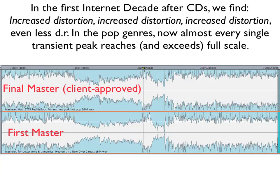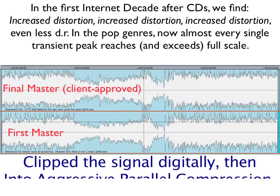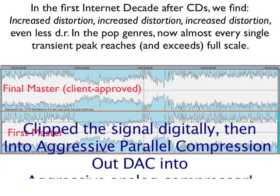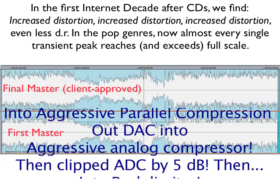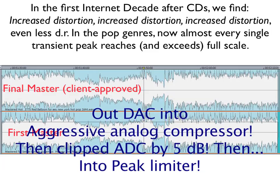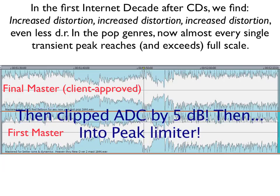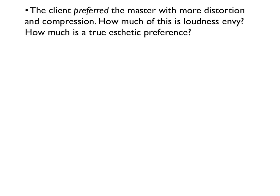So what processes did I go through to make the final master that the client approved? I started inside a DAW and clipped the signal going out of the DAW into some very strong, aggressive parallel compression in the digital domain. Out of the digital domain, I clipped once again and sent the signal into the A-to-D converter hot enough to put it 5 dB into overload. Out of the A-to-D, it went into the digital domain and met up with some peak limiting. That's pretty shocking, and it just goes to show the kinds of distortion that the current 20-something generation seems to want — at least that was the request of my producer. The client preferred the master with more distortion and compression.